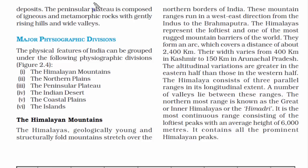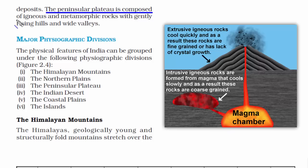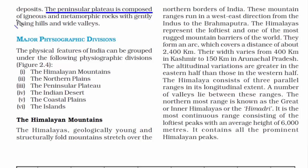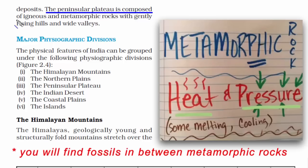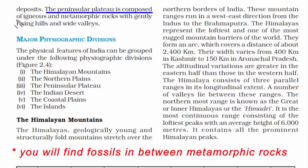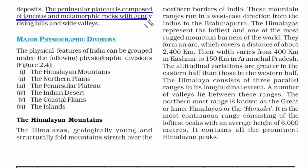The peninsular plateau is quite different from the northern plains — it is composed of igneous and metamorphic rocks. Igneous rocks are formed through the cooling and solidification of magma or lava, while metamorphic rock has undergone change by extreme heat and pressure. Since the peninsular plateau is the oldest landmass, these two types of rocks are bound to be present there.